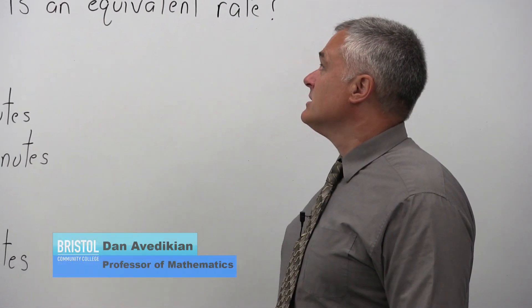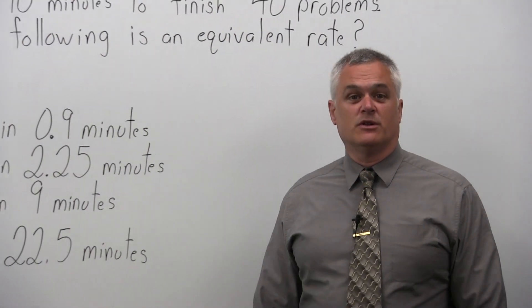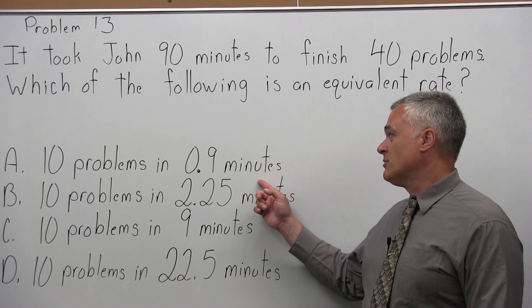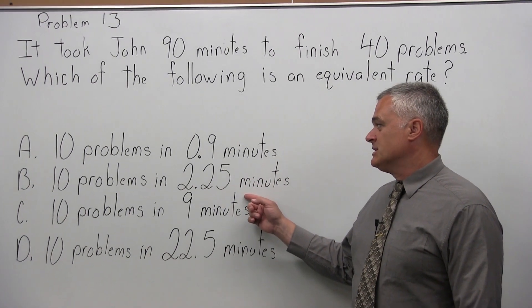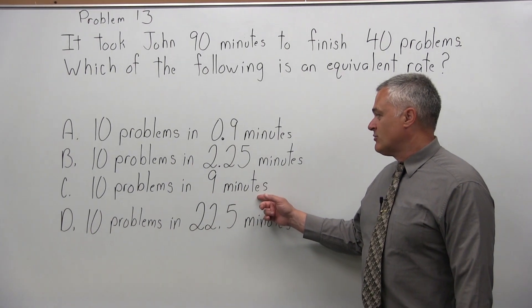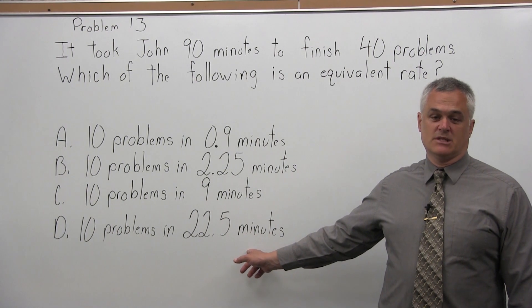It took John 90 minutes to finish 40 problems. Which of the following is an equivalent rate? We have four options. Option A is 10 problems in 0.9 minutes. Option B is 10 problems in 2.25 minutes. Option C is 10 problems in 9 minutes. And Option D is 10 problems in 22.5 minutes.